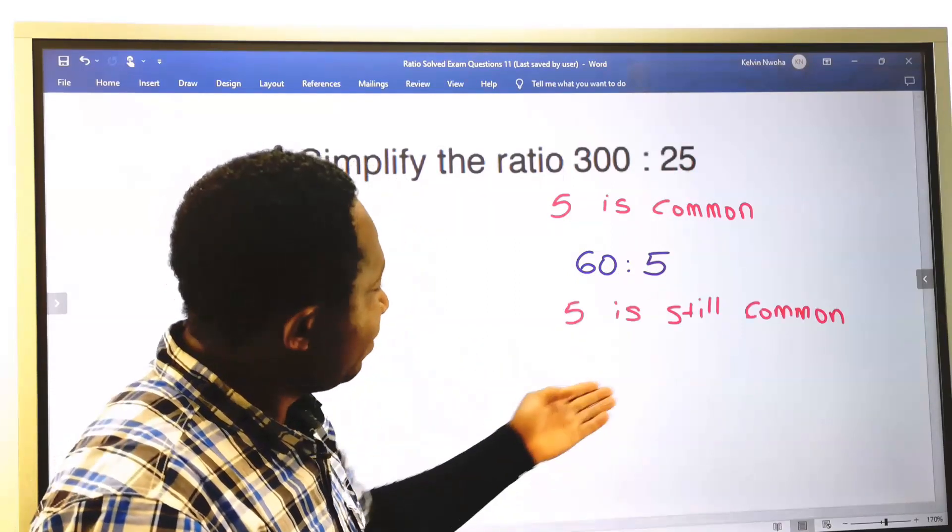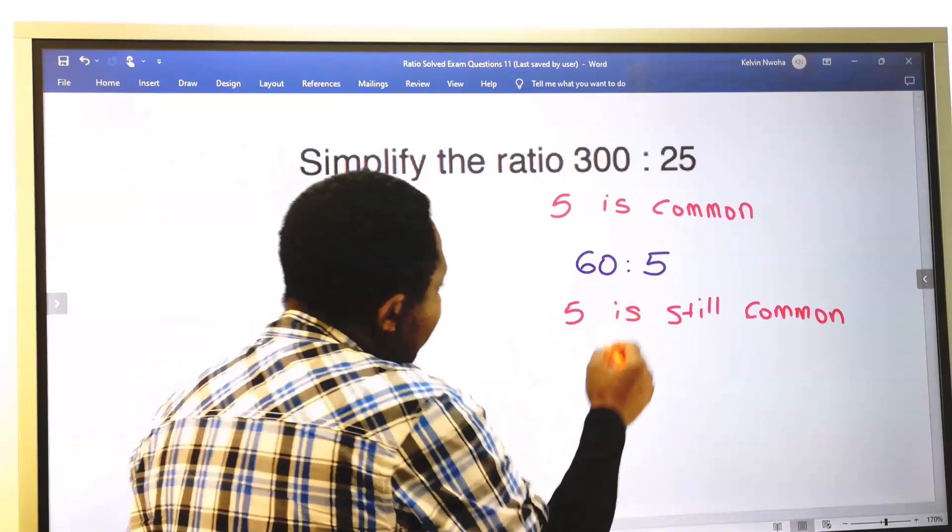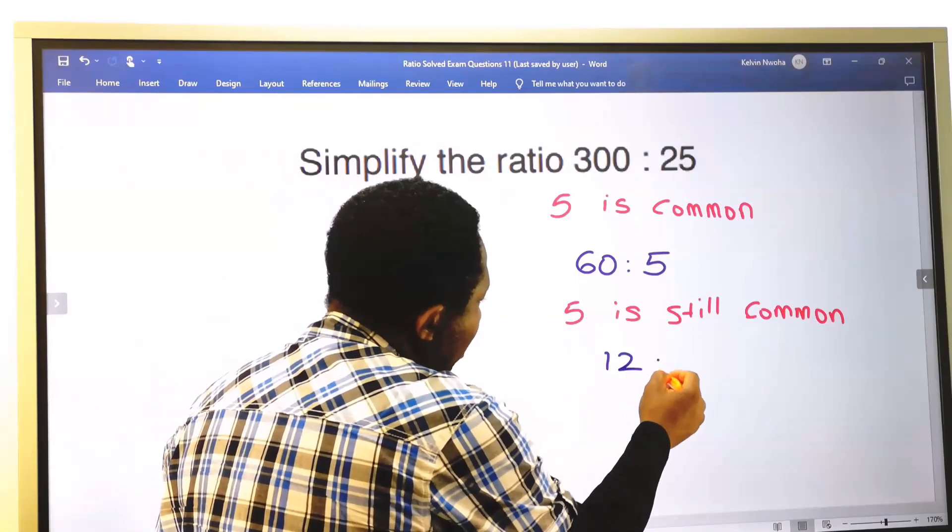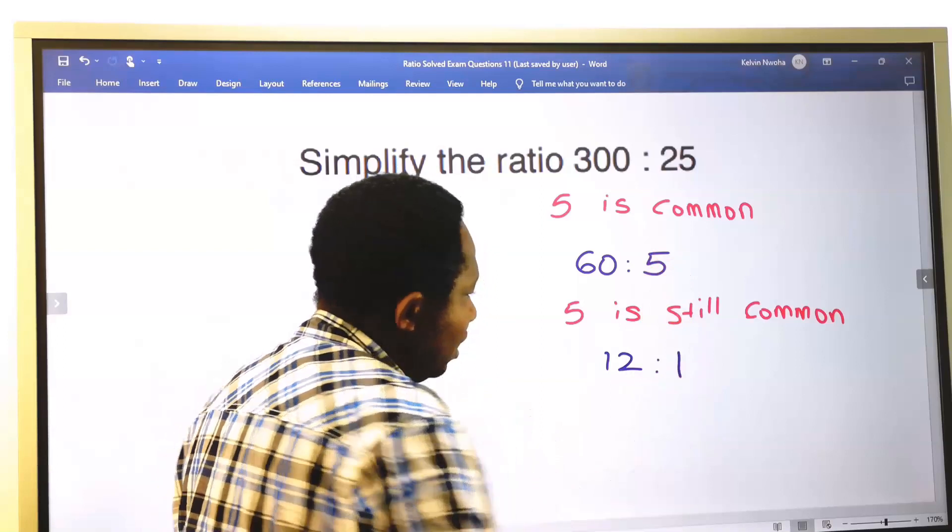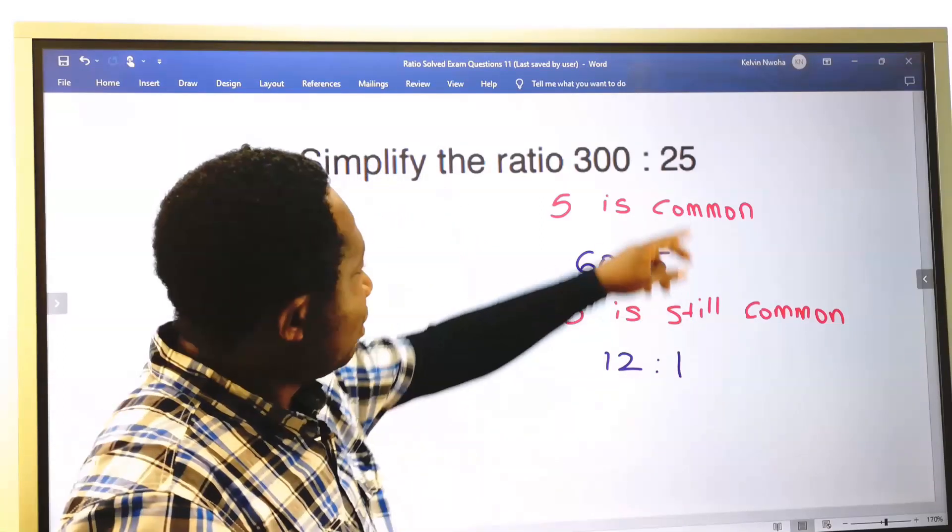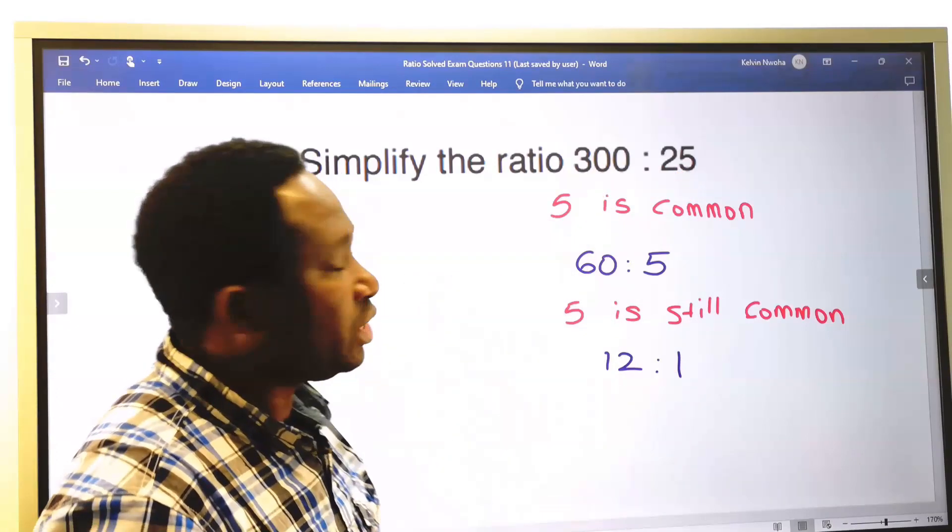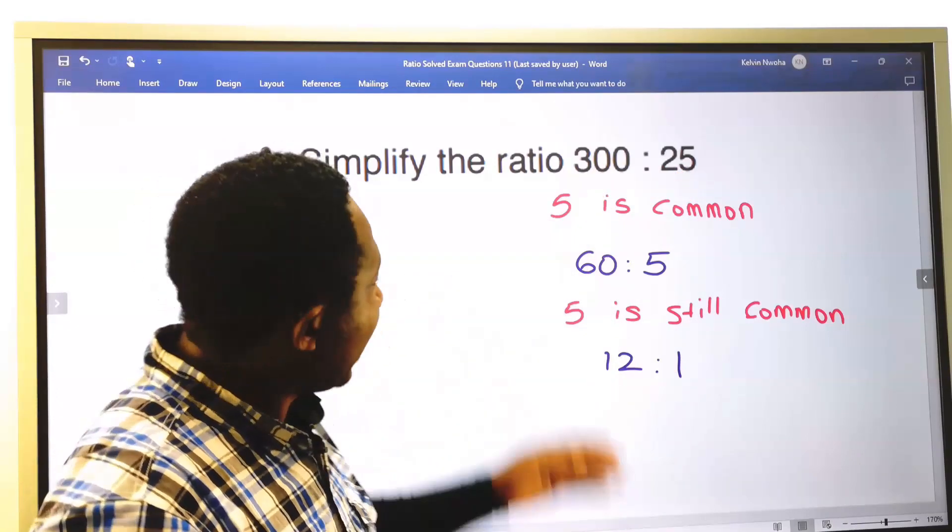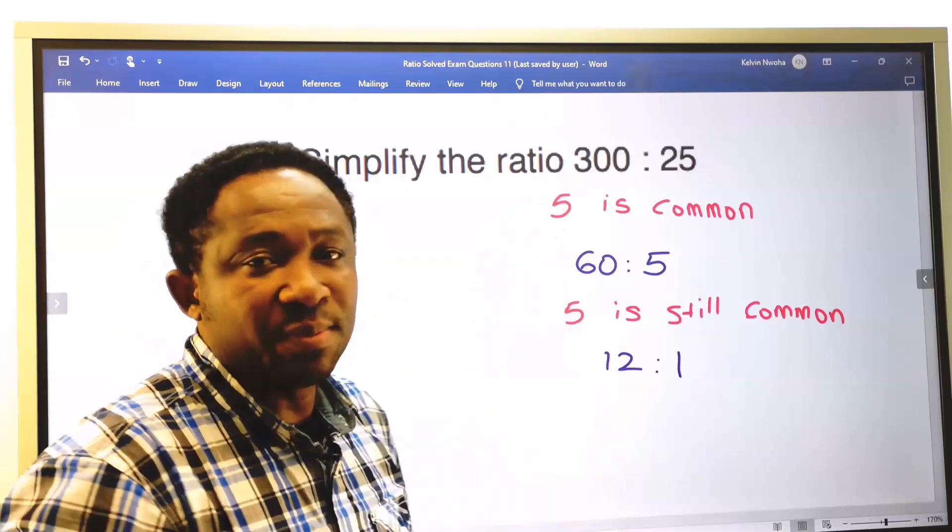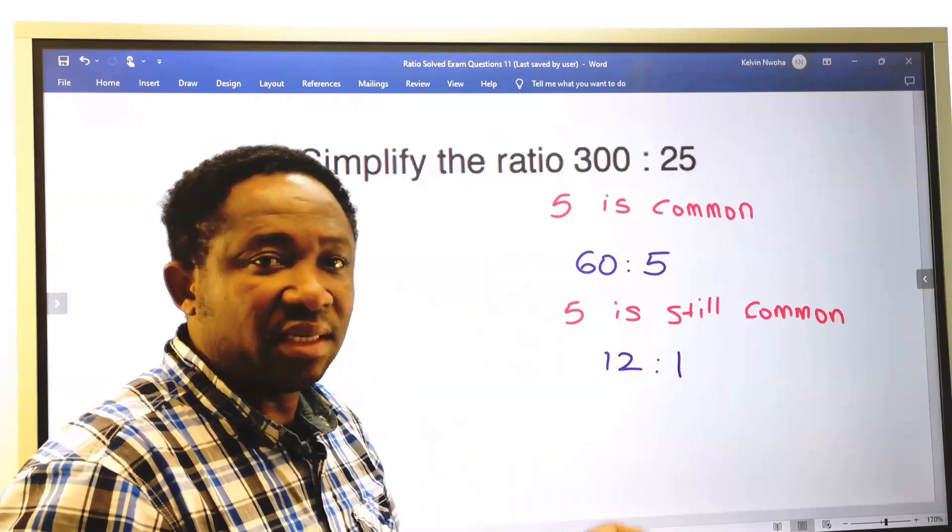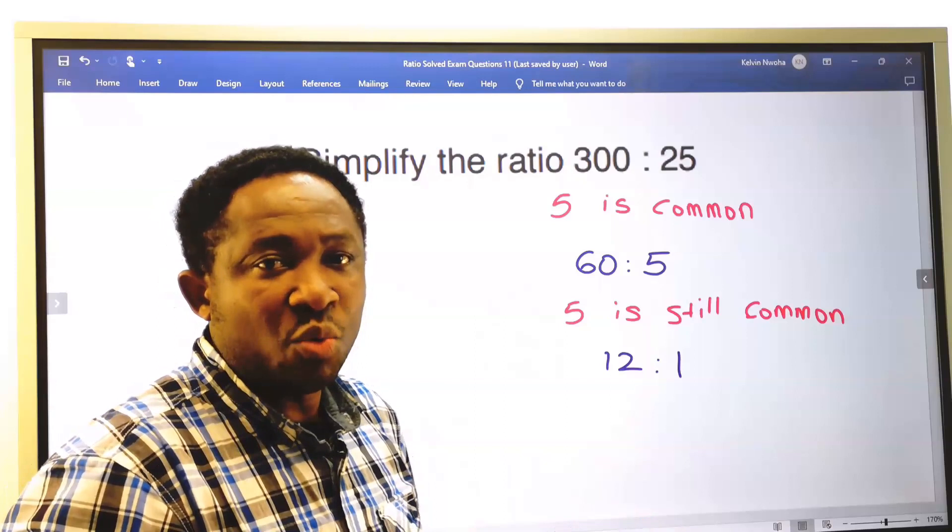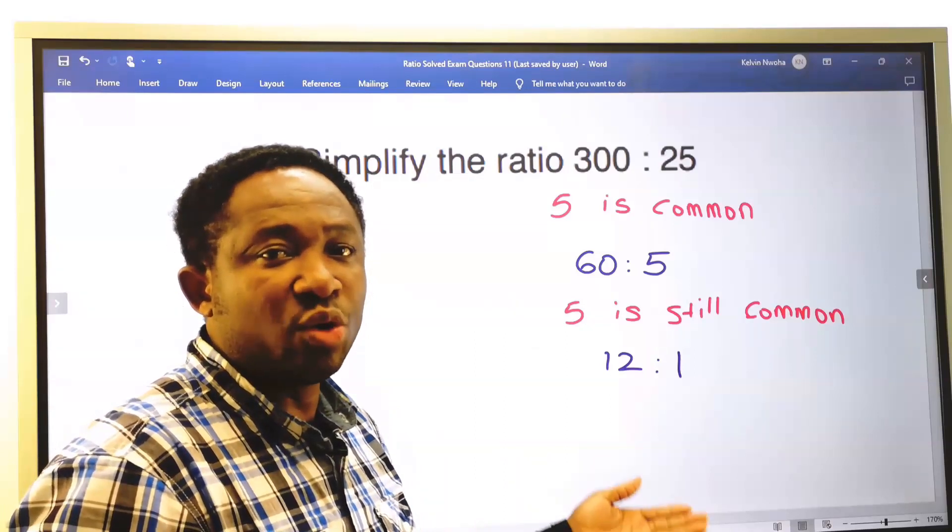Next, 5 is still common. 5 into 60 is 12, and 5 into 5 is 1. Or you can divide by 25 directly—25 into 25 is 1 and 25 into 300 is 12. But I started with the simplest number. And this is your answer. We have simplified this to its lowest form.